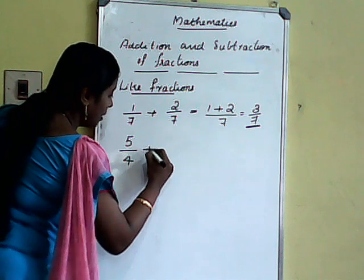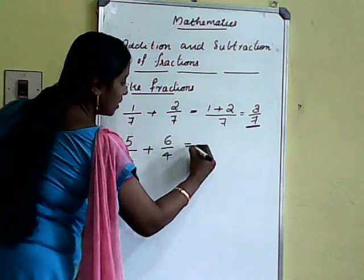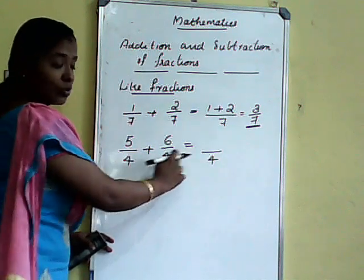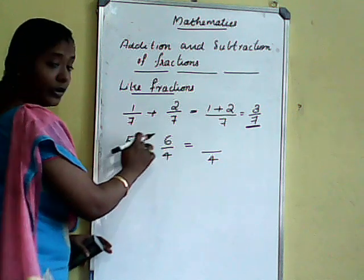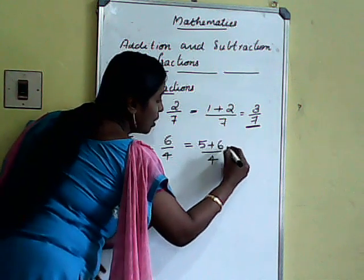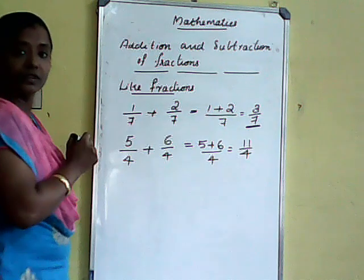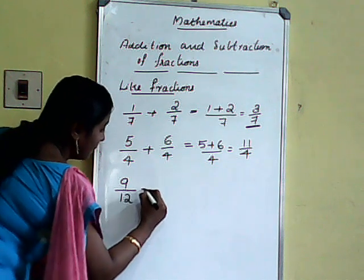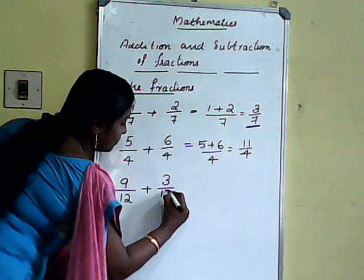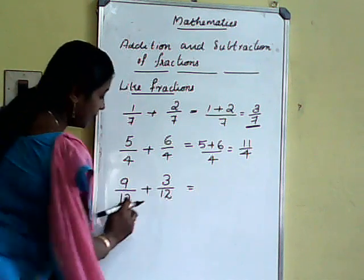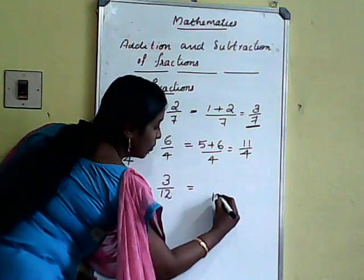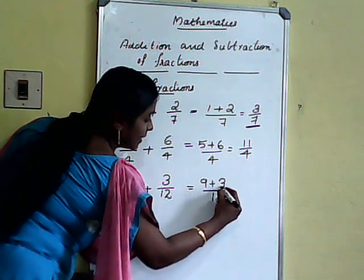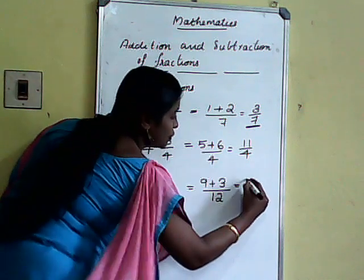One more example: 5 by 4 plus 6 by 4. The denominator is same, so we put the same number here and add only the numerators: 5 plus 6. What will we get? 11 by 4. Next one: 9 by 12 plus 3 by 12. Here the denominator is same, so put the denominator and do the operation on the numerator. 9 plus 3 gives 12 by 12, which equals 1.